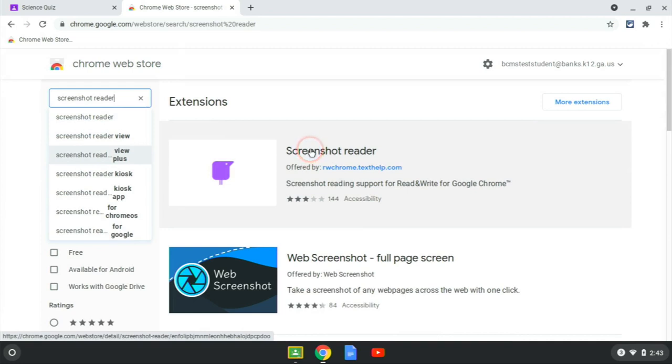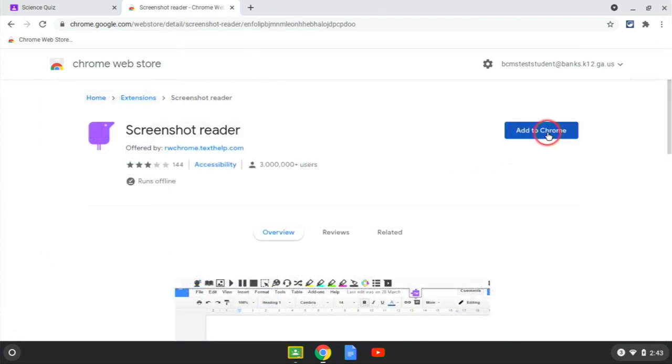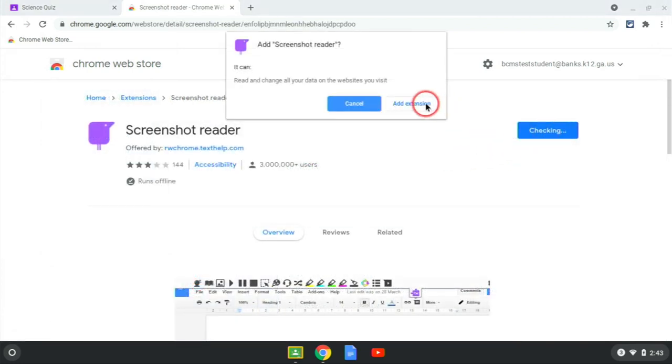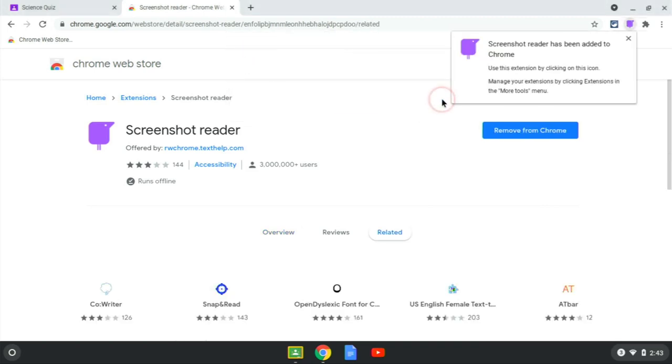Click on Screenshot Reader, then click Add to Chrome. Click Add Extension and wait patiently while it installs. You can close the confirmation window after it pops up.